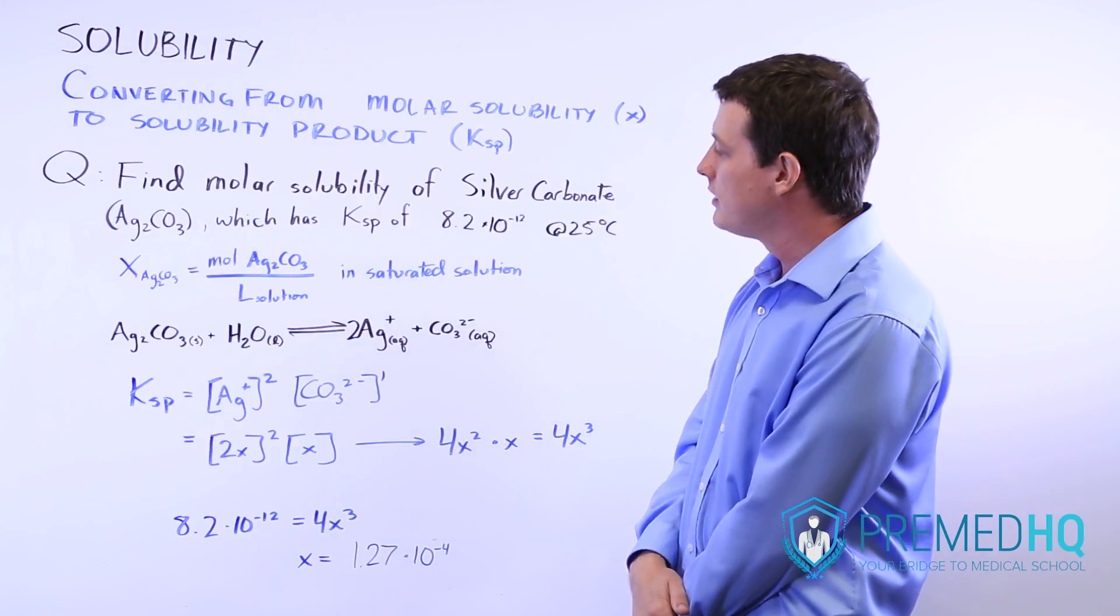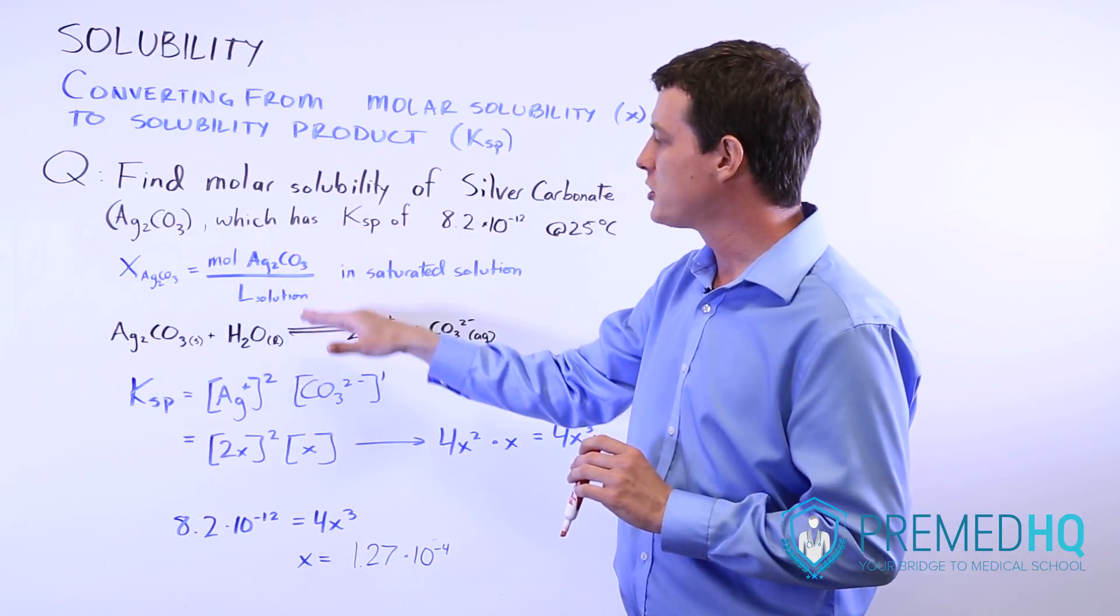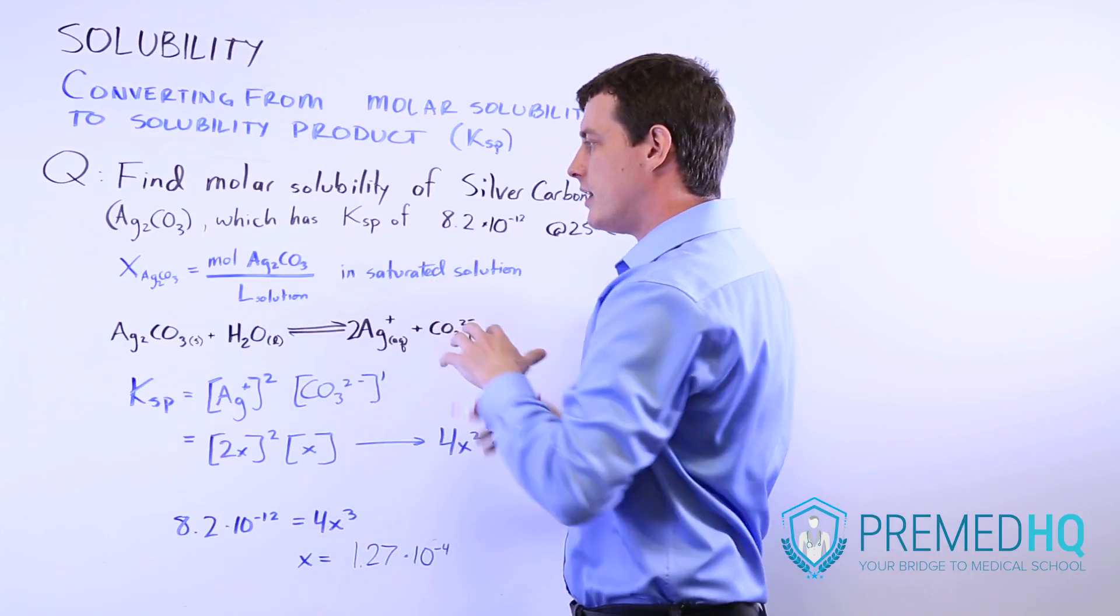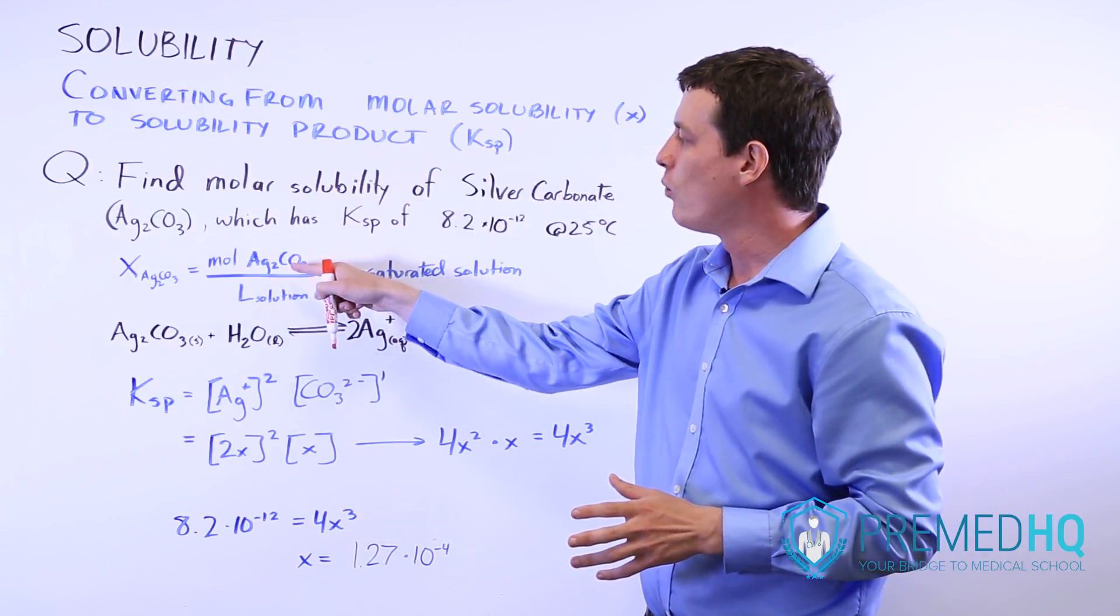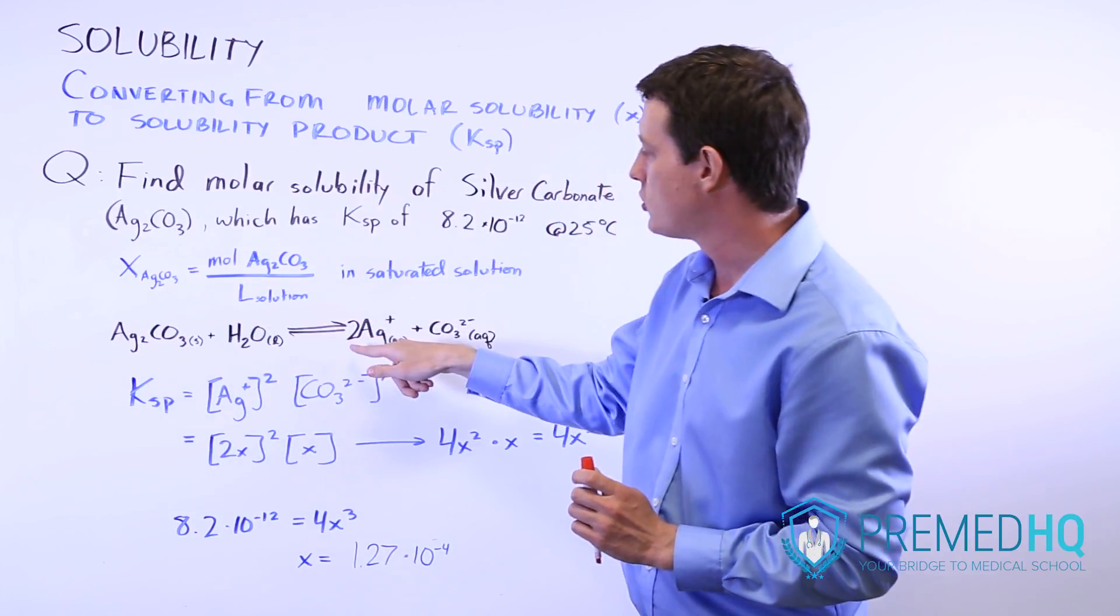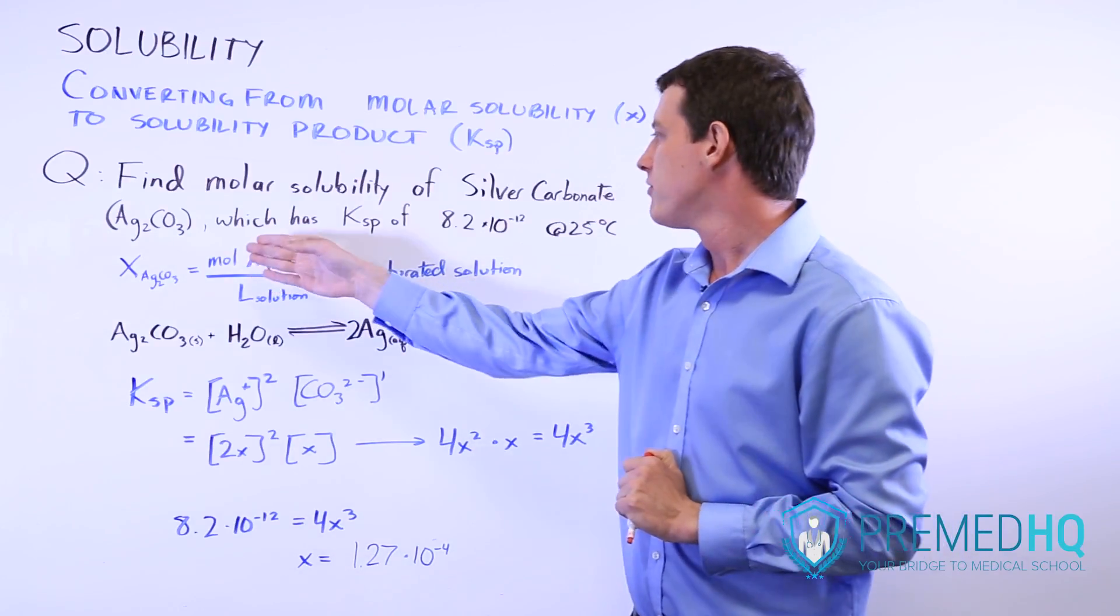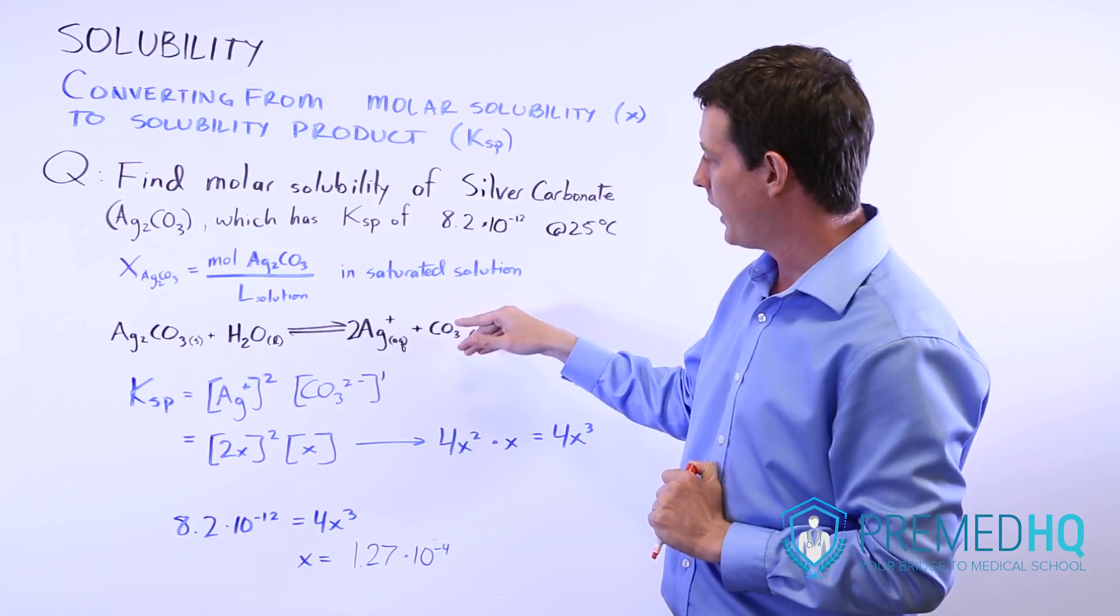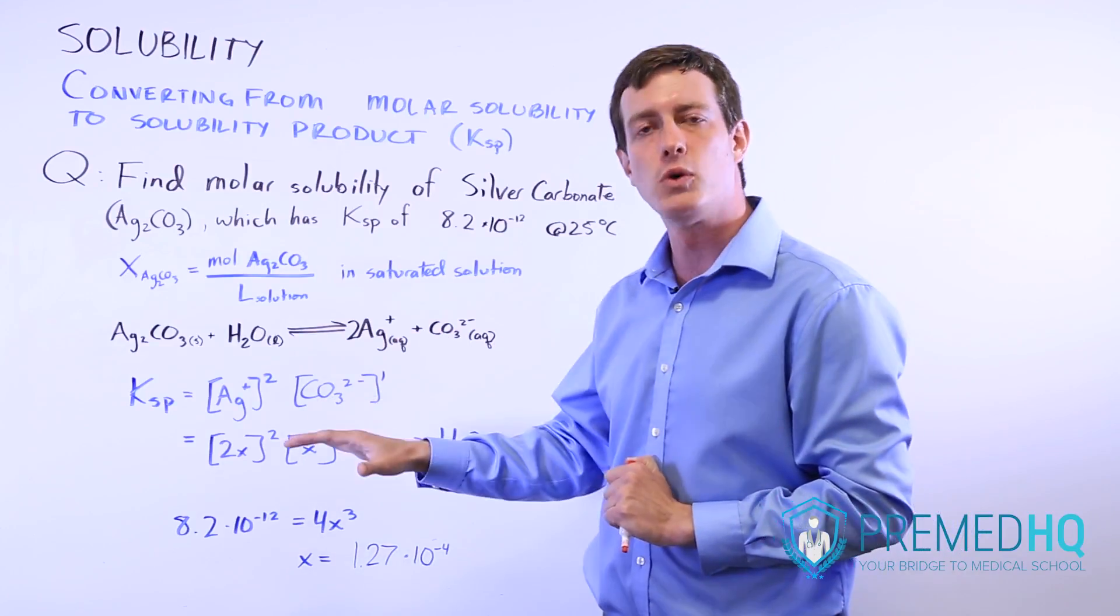The way that you can convert between KSP and molar solubility is to realize that molar solubility is telling you about a saturated solution just as this one is. What we can draw from that is that for every silver carbonate molecule that we put into our solution, we're going to yield two silver ions and one carbonate ion. Every time we put in one mole per liter, we're going to get two moles of the silver ions and one mole of the carbonate ions. The amount, the number of moles per liter of this that we put in, will be equal to the number of carbonate ions we have, and it will be half of the number of silver ions that we have because for every mole of silver carbonate we put in, we get two moles of silver ions.